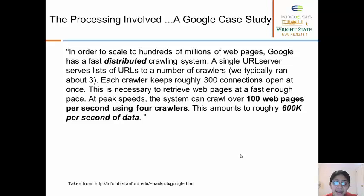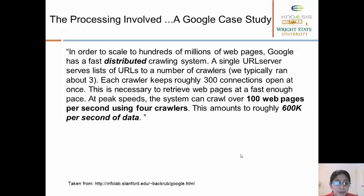Let's look at the processing involved in the Google search engine specifically. In order to scale to hundreds of millions of web pages, Google has a fast distributed crawling system. A single URL server serves lists of URLs to a number of crawlers, and each crawler keeps roughly 300 connections open at once — necessary to retrieve web pages at a fast enough pace. At peak speeds, the system can crawl over 100 web pages per second using four crawlers, which amounts to roughly 600 kilobytes per second of data.